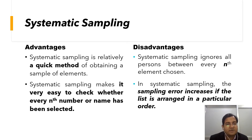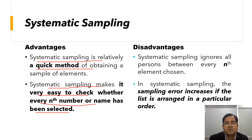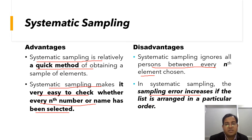Regarding advantages and disadvantages: systematic sampling is a relatively quick method. In social surveys, we can quickly use this method to select households. It makes it very easy to check every nth name to be selected. However, systematic sampling ignores all persons between every nth element, and sampling error can increase if the list is arranged in a particular order, such as by age or other criteria.